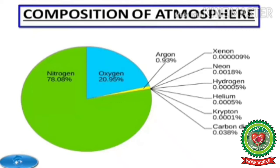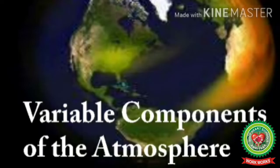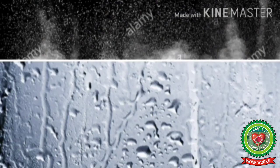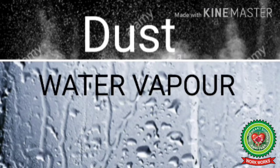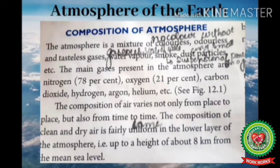The proportion of these gases is fairly constant in the lower layers, so they are called the fixed components of the atmosphere. Beside the fixed components, there are also variable components whose amount varies from place to place and time to time. The important variable components include water vapor and particles of dust, smoke, salt, and pollen grains. Both fixed and variable components of the atmosphere affect life on the earth in different ways.